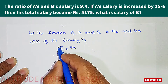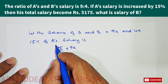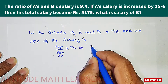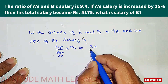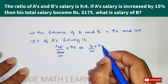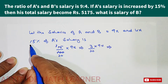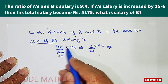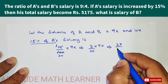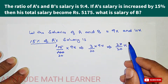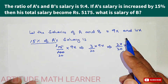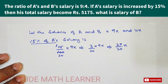If we simplify, dividing 15 by 5 we get 3, and 100 by 5 we get 20. So this becomes 3 divided by 20, multiplied by 9x. Here we get the 15 percent of A's salary, that is 27 divided by 20x. So this is only the 15 percent of A's salary.